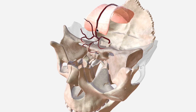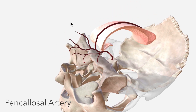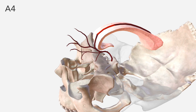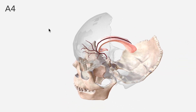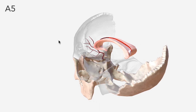We then move on to this section of the ACA, which is known as the pericallosal artery, and the remaining three segments of the ACA are made up by this pericallosal artery. A3 runs from the genu until the artery curves quite acutely posteriorly. A4 is from this section here until the coronal suture. And then from there, we have A5, the last segment of the ACA.